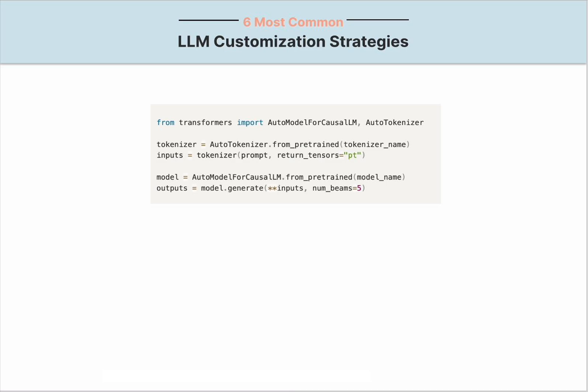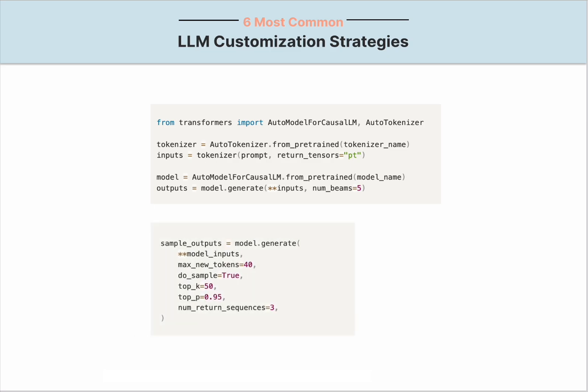Top-K sampling filters the K most probable next tokens and redistributes the probability among those tokens, and the model then samples from this filtered set. Instead of using a fixed number of tokens like top-K, top-P sampling selects from the smallest possible set of tokens whose cumulative probability exceeds the threshold P. The example code snippet below samples from the top 50 most likely tokens with a combined probability higher than 0.95.